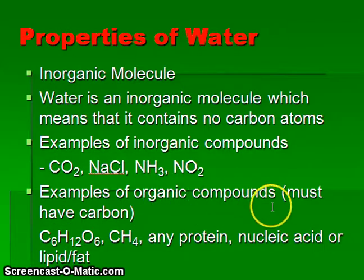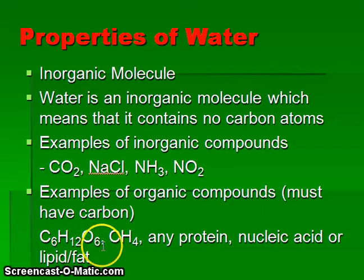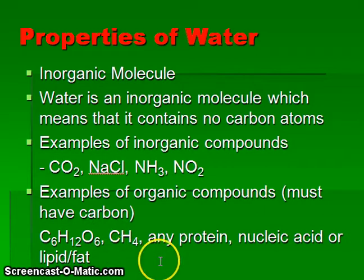Examples of organic compounds — these must contain carbon. C6H12O6 (glucose) and CH4 (methane) are organic substances, as are the proteins, nucleic acids, and lipids and fats found in our bodies, all of which contain carbon and are therefore considered organic.